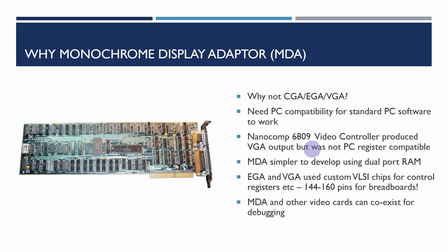I develop a monochrome display adapter compatible card. Why not CGA, EGA, or VGA? We need PC compatibility for standard PC DOS software to work. The original video controller developed as part of the 6809 project produced VGA output but wasn't PC register compatible. The monochrome display adapter is simpler to develop, and using dual-port video RAM is even simpler. The EGA and VGA video standards use custom very large scale integration chips with 144 to 160 pins in high-density packages, so not really suitable for breadboards.